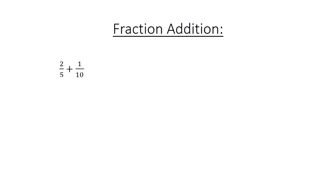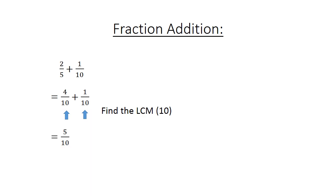Fraction addition: 2 over 5 plus 1 over 10. Find the lowest common multiple: 4 over 10 plus 1 over 10 equals 5 over 10, which equals 1 over 2.